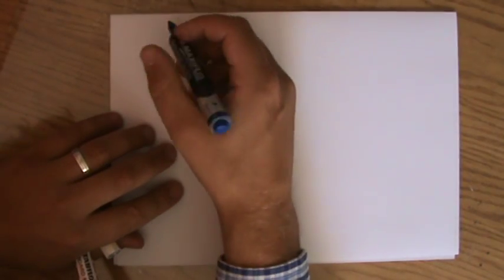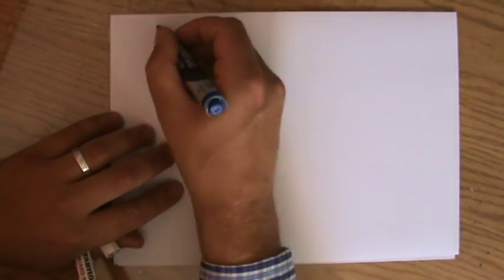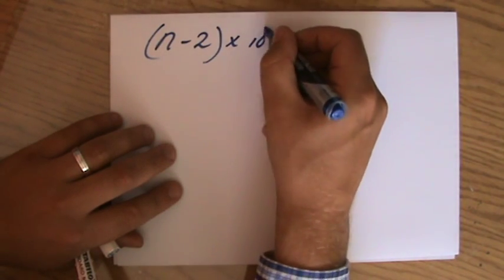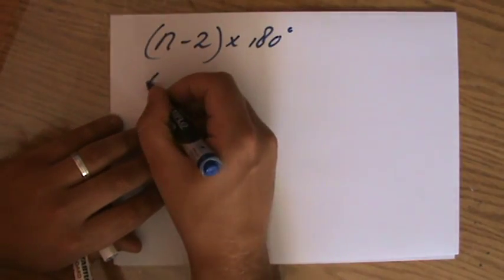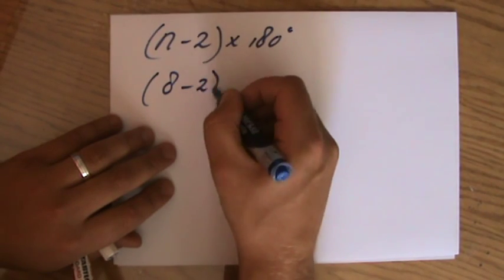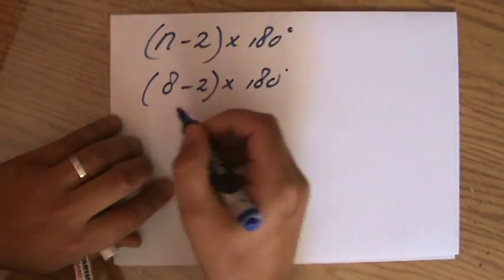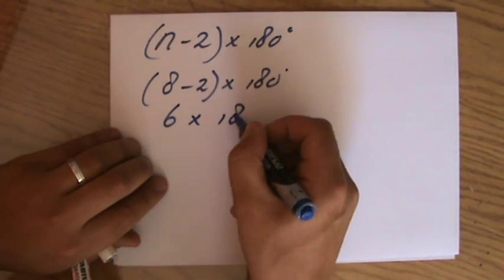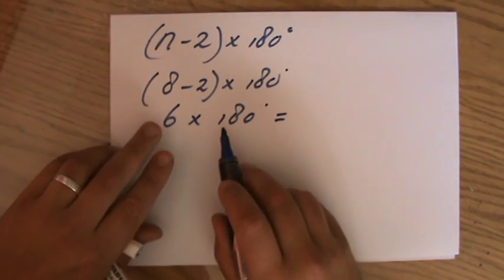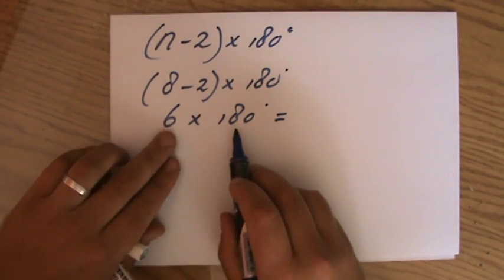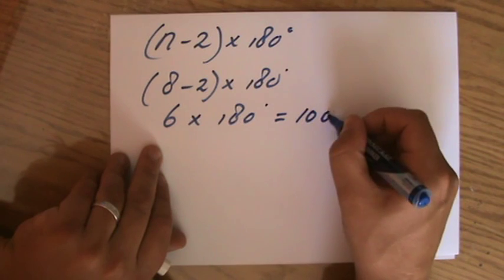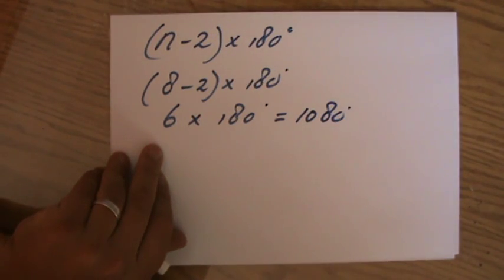So, to find the sum of the interior angles, we understand we have to do n minus 2 times 180 degrees. So if we're talking about an octagon, it's 8 minus 2 times 180 degrees. So 6 times 180 degrees, and that is 1080 degrees.